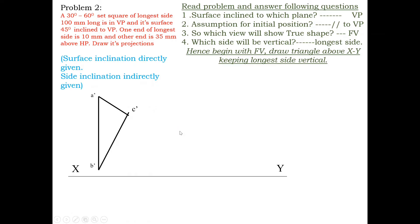Label the points A-dash, B-dash, C-dash for the front view, and A, B, C, D for the top view. This is the front view — the triangle. This angle is 45 degrees.